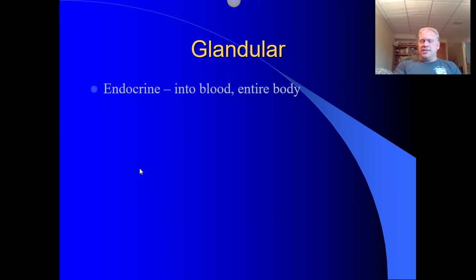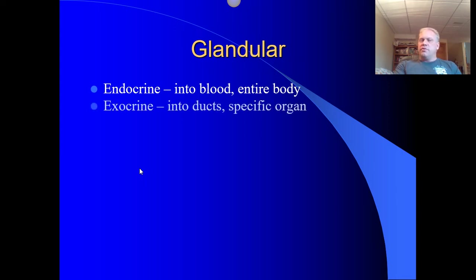The last type of epithelial tissues is glandular in nature. Those that are endocrine in nature make hormones that go into the bloodstream and affect the entire body. Then there are those referred to as exocrine — they make their products and move them out through a very specific duct into a target organ. We refer to those as exocrine glands.